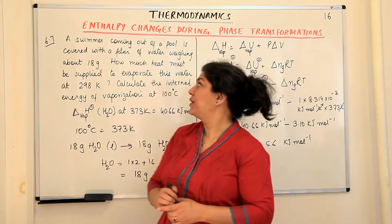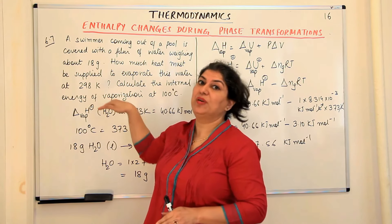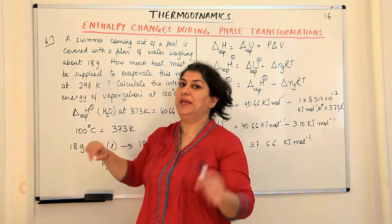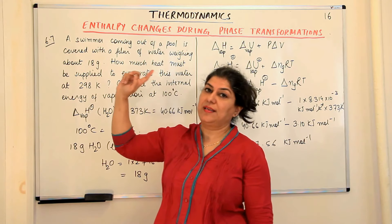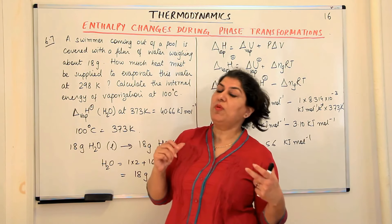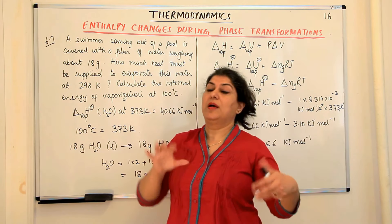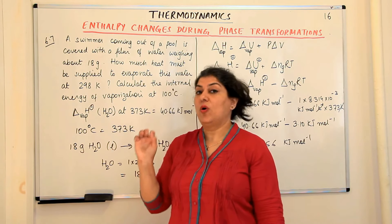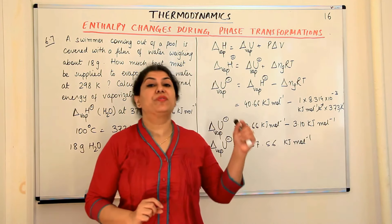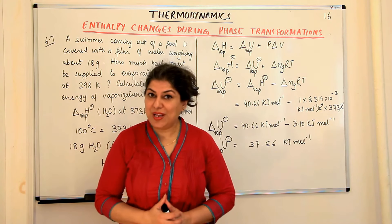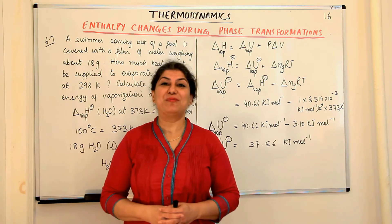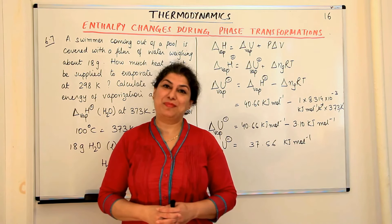This is how you solve numerical problems based on enthalpy of vaporization. Remember that the value given is the molar enthalpy, and you must multiply by the stoichiometric coefficient as needed. Always find the sum of enthalpies of products minus enthalpies of reactants. If you found this video helpful, please give it a thumbs up, subscribe to my channel, recommend it to your friends, and keep returning for more chemistry videos. Thank you for watching and bye-bye for now.